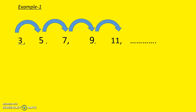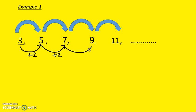Let's go to question one: 3, 5, 7, 9, and 11. If you jump from 3 to 5, you can see there's a plus 2. From 5 to 7 again it is plus 2, and 7 to 9 is plus 2. So our rule is plus 2.